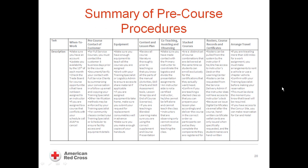Here is a summary of the pre-course procedures. Make sure that you update your availability by the 15th of each month on When to Work and check for class assignments when the schedule is published. Also, be on the lookout for available courses on the trade board. For full-service classes, make sure that you contact the customer three business days prior to confirm all the logistical details using the script, and verify your contact by sending a follow-up email to the client and copying your training specialist.